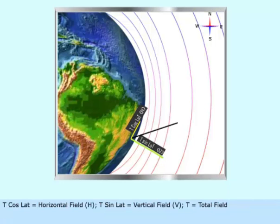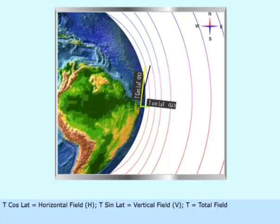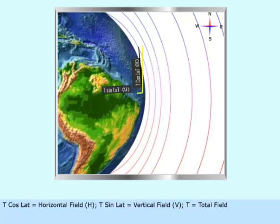T cosine latitude equals horizontal field H. T sine latitude equals vertical field V. T equals total field.